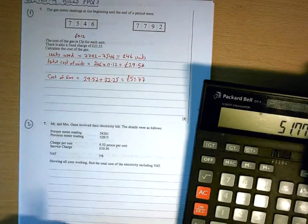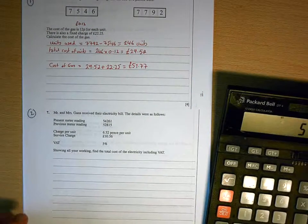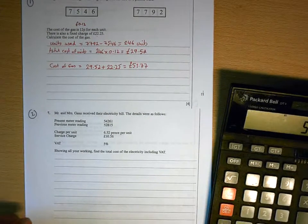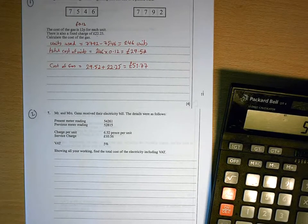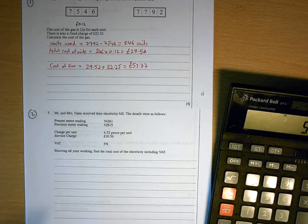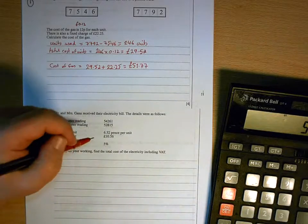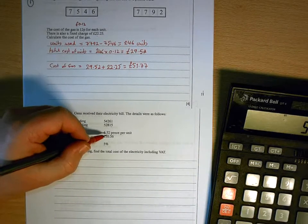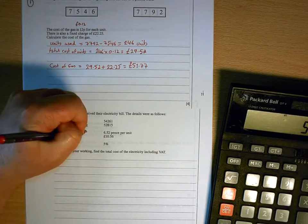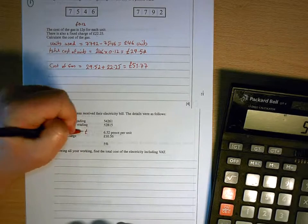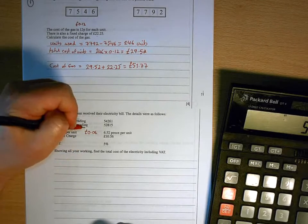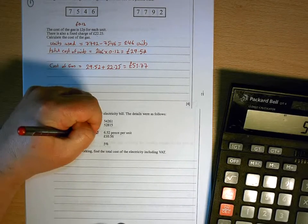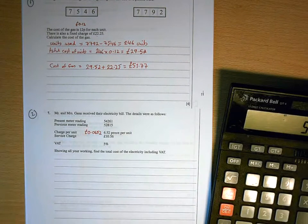OK, let's move on to the next question. And with this question, there's a little bit more work to do. First of all, do exactly the same thing. Look for any pences and turn them into pounds. So in this question, we've got 6.52 pence. Turning that into pounds, well, 6 pence would be 0.06. So 6.52 pence would be 0.0652.